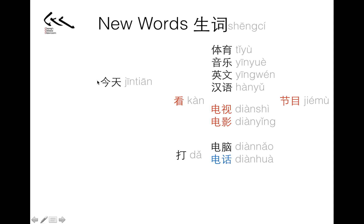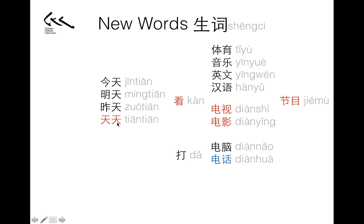Let's check all the dates first. Today: 今天. Tomorrow: 明天. Yesterday: 昨天. Here comes our new word: 天天. Today, tomorrow, yesterday — they share one character the same. 天 means 'day.'